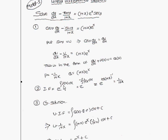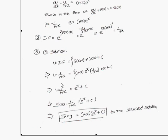The integrating factor is 1/(1 + x). The general solution is u times the integrating factor equals the integral of Q(x) times the integrating factor dx, plus c. So u divided by (1 + x) equals the integral of (1 + x)·e to the x times 1/(1 + x) dx, plus c. The (1 + x) terms cancel, leaving u/(1 + x) equals e to the x plus c. Substituting back u equals sin y, we get sin y equals (1 + x)(e to the x plus c) as the required solution.